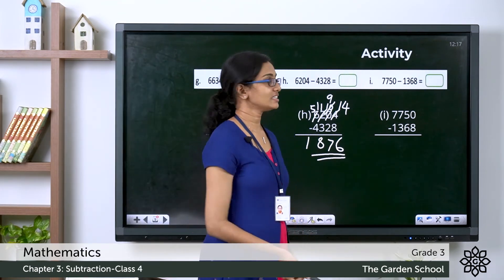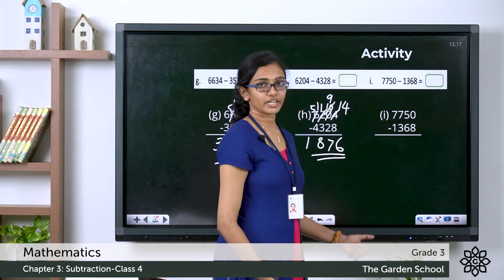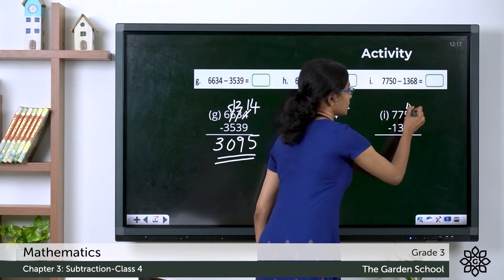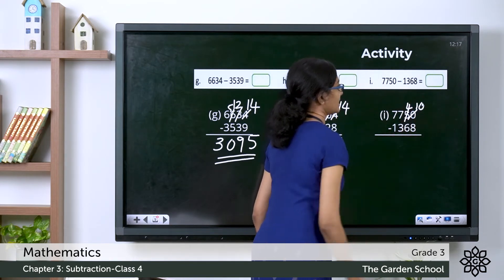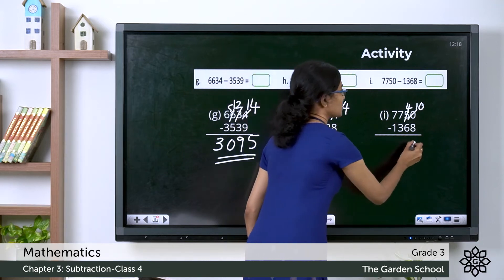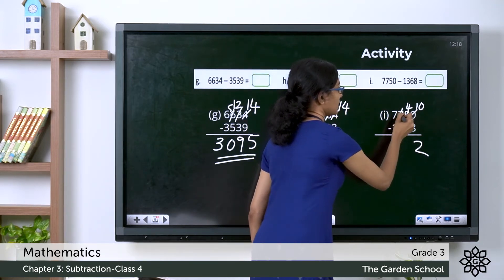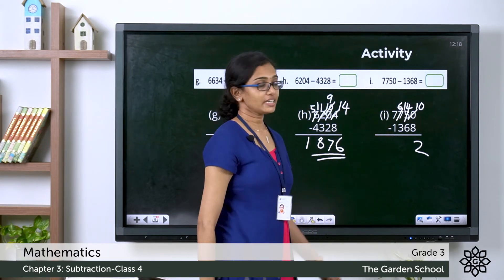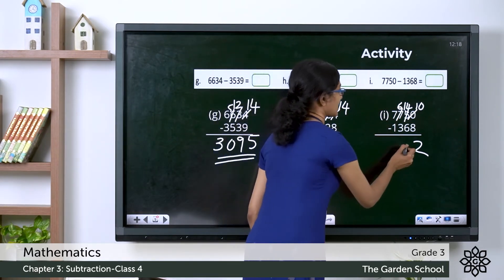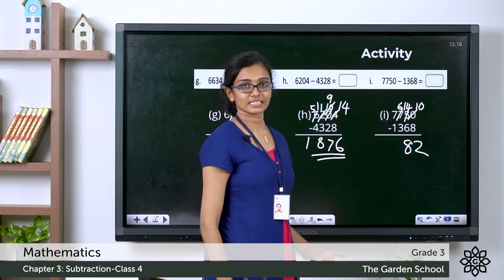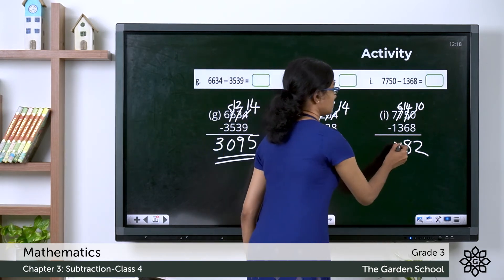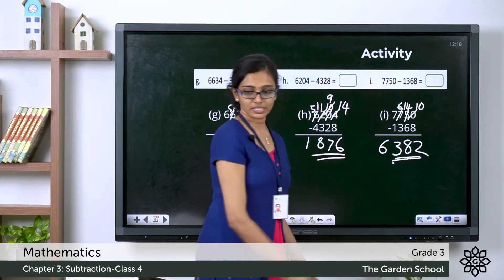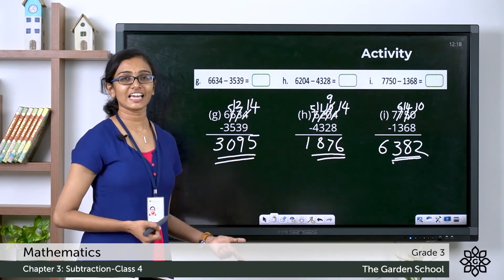Let's do the next question. Here we have 0 minus 8 — we cannot take away 8 from 0, so we borrow, making it 4 and 10. 10 minus 8 is 2. Now we borrow from the hundreds place, so this becomes 6 and this becomes 14. 14 minus 6 is 8. Then 6 minus 3 is 3, and 7 minus 1 is 6. The difference is 6382.